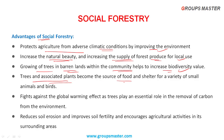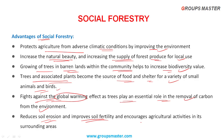Trees and associated plants become a source of food and shelter for a variety of small animals and birds. Social forestry fights against the global warming effect, as trees play an essential role in the removal of carbon dioxide from the environment through photosynthesis, helping to control global warming. It also reduces soil erosion, improves soil fertility, and increases agricultural activities in surrounding areas.